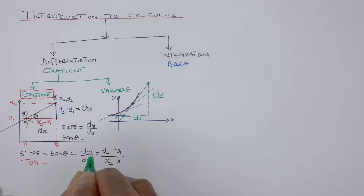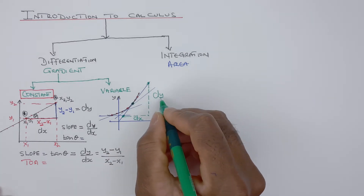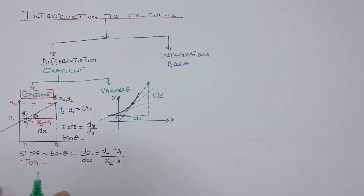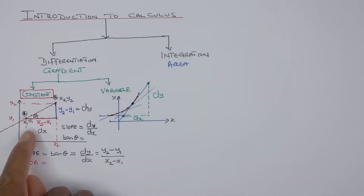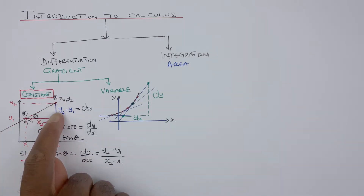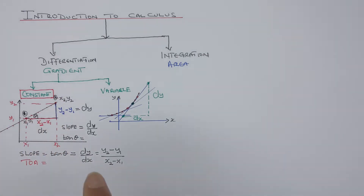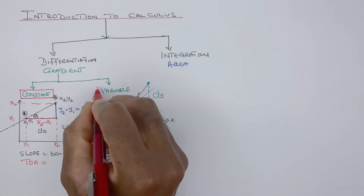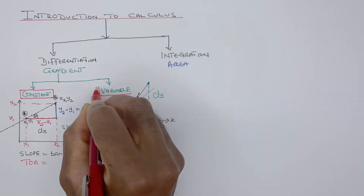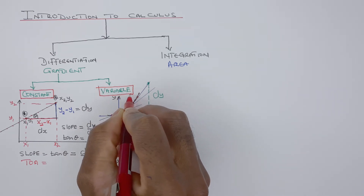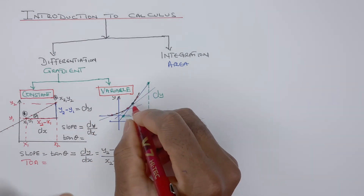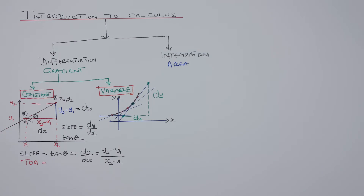So that gives us changing y over changing x — differential of y over differential of x. That's how you find the gradient at a point. For a constant gradient, you just pick any two points and find the change in y over change in x. For a variable gradient, the gradients are not the same — they are varying — so you have to pick a specific instant point to find your gradient. That's why variable gradients are different from constant gradients.